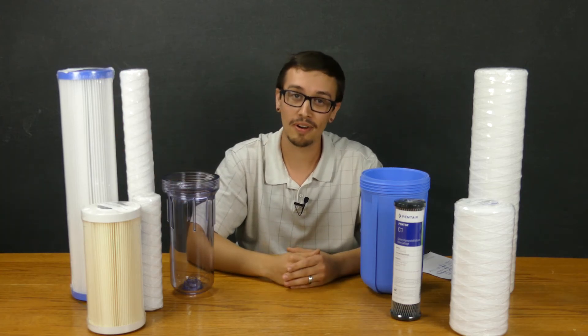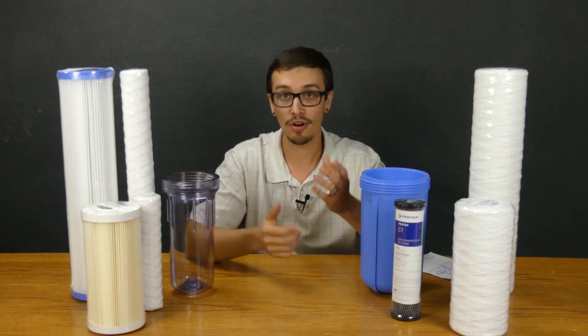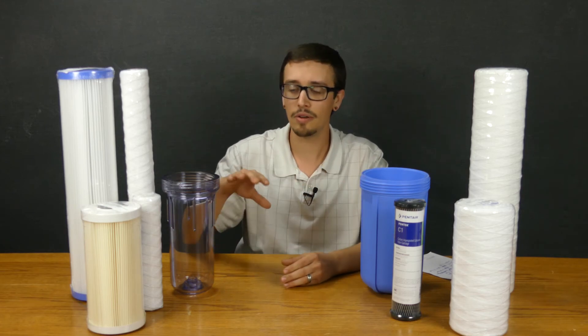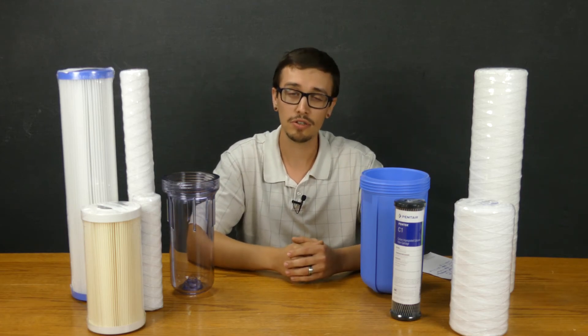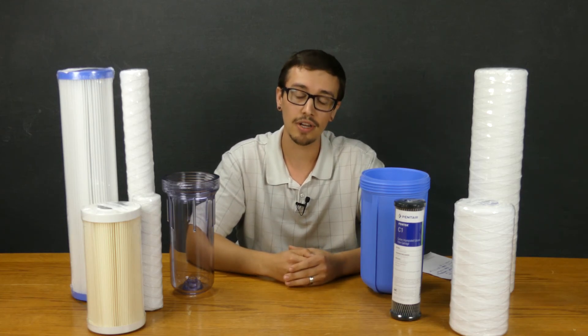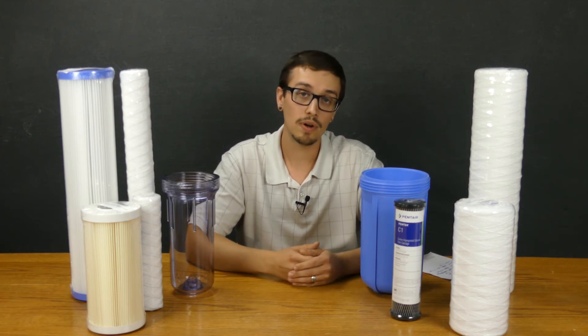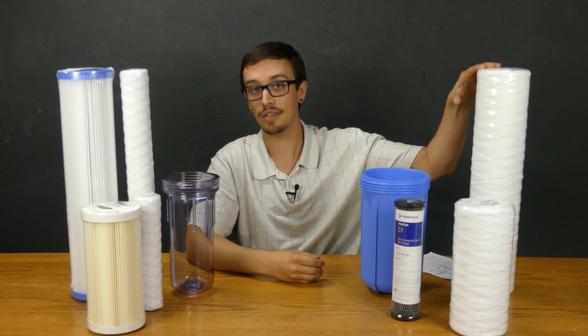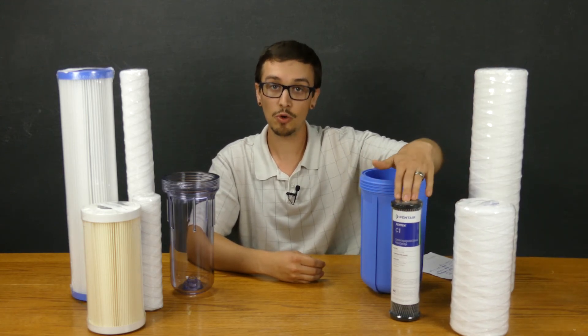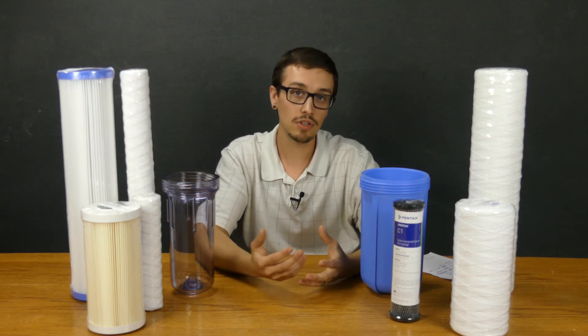That about sums up our basic overview of filters and what you can expect and why there are various sizes. The one last thing I'll leave you with is that the sizes we have here represented are essentially standard sizes. There's really only four major sizes that you're going to encounter with filters. You're going to encounter the 4.5 by 20 inch filters, which is what this size is. You're going to encounter 4.5 by 10 inch filters, which is what this size is. And then 2.5 by 10 inch and 2.5 by 20 inch. Those are essentially the only four.